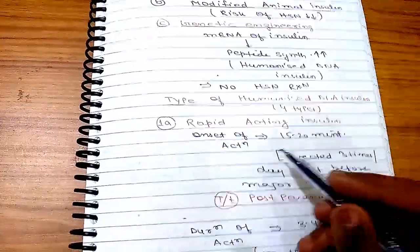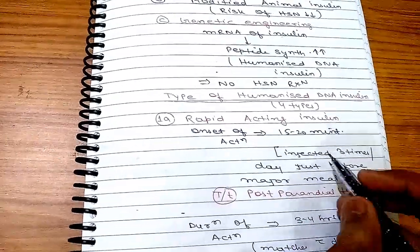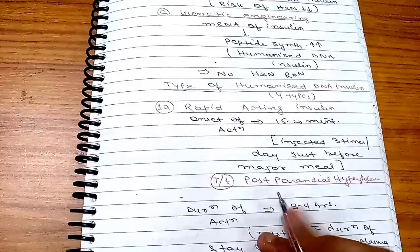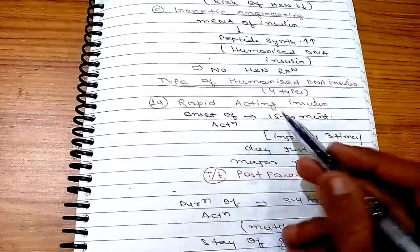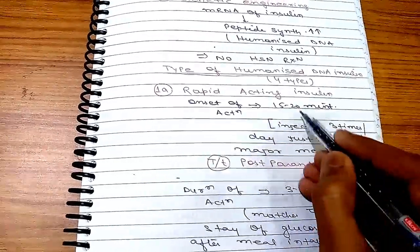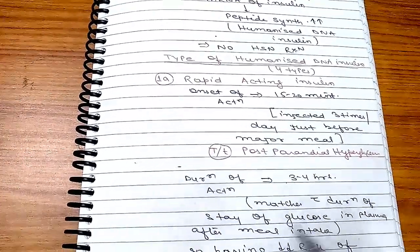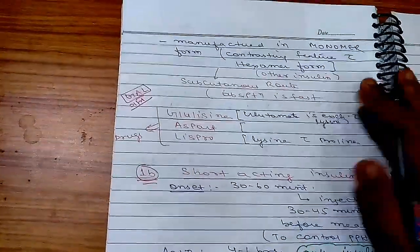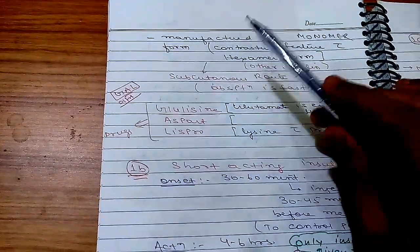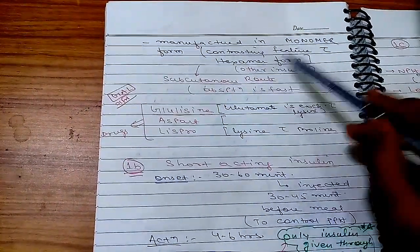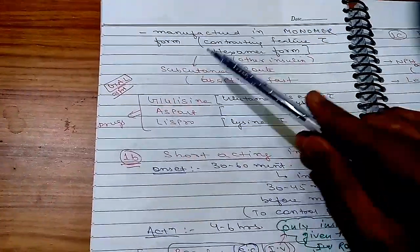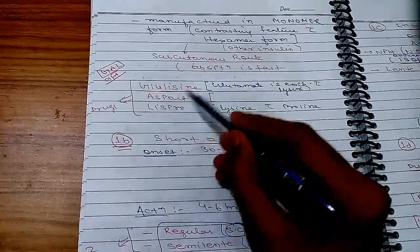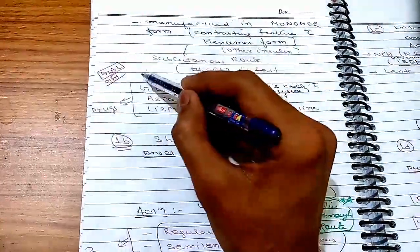There are four types of humanized DNA insulin. The first is rapidly acting insulin: onset 15–20 minutes, injected three times per day just before major meals (breakfast, lunch, dinner) to treat postprandial hyperglycemia. Duration of action is 3–4 hours, matching the duration of glucose elevation after a meal, so there is less risk of hypoglycemia. Rapidly acting insulins are manufactured in monomeric form (other insulins are in hexameric form) and given subcutaneously. The drugs in this group — remembered by the mnemonic GAL — are glulisine, aspart, and lispro.